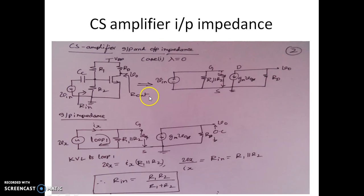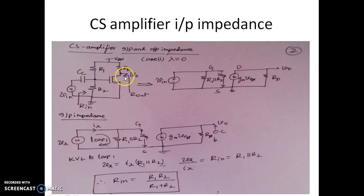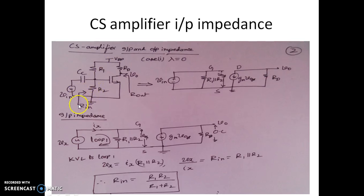Now let us take the CS amplifier. This CS amplifier has R1 and R2 as biasing resistors, CC is a coupling capacitor, and RD is the resistor that allows the drain current to pass through so that the MOSFET is in saturation. Rin is the input impedance seen at the input terminal, and RO is measured at the output. The amplifier is formed by R1, R2, RD, and the MOSFET.